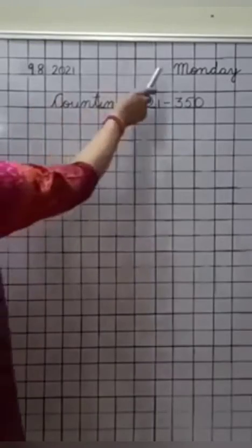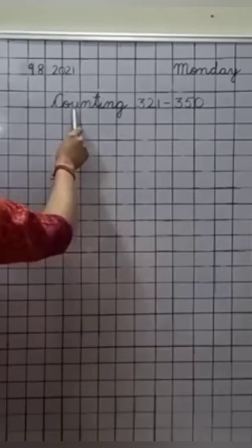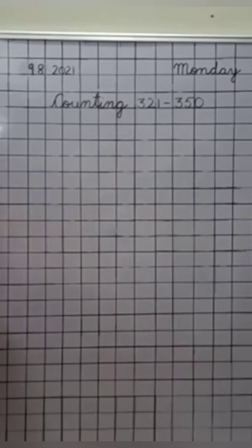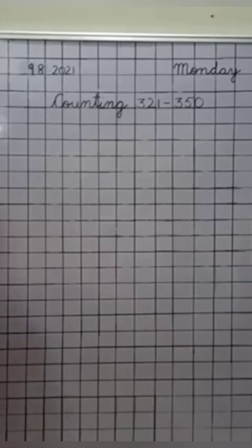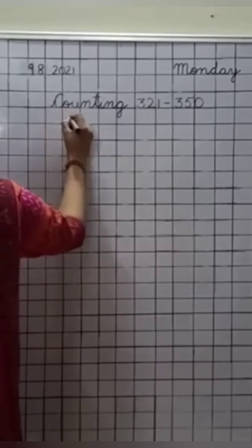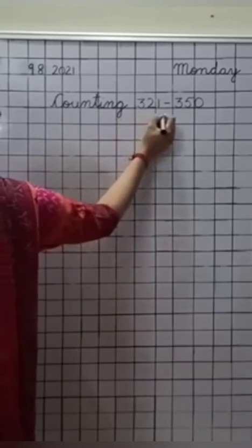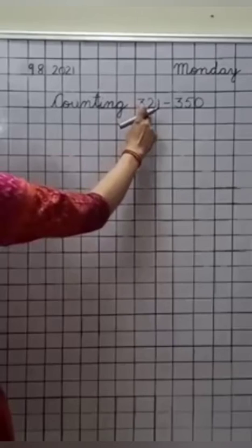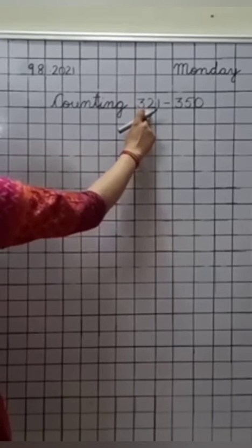We will do the next three lines of counting, that is from 321 to 350. Write down the date, day, and heading: counting 321 to 350. Now you all know that we are to leave this line. Right? So now let us start the counting. Today we will start the counting from 321.